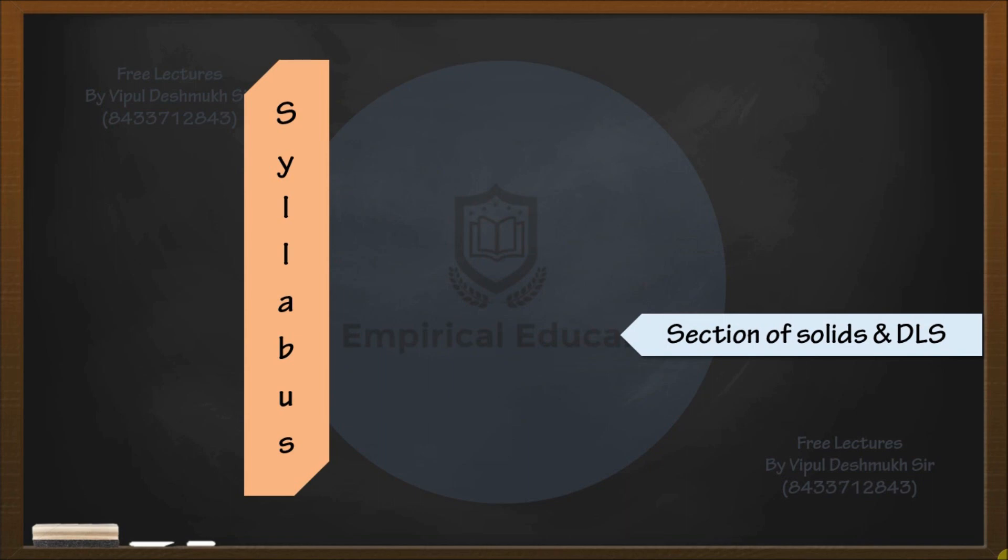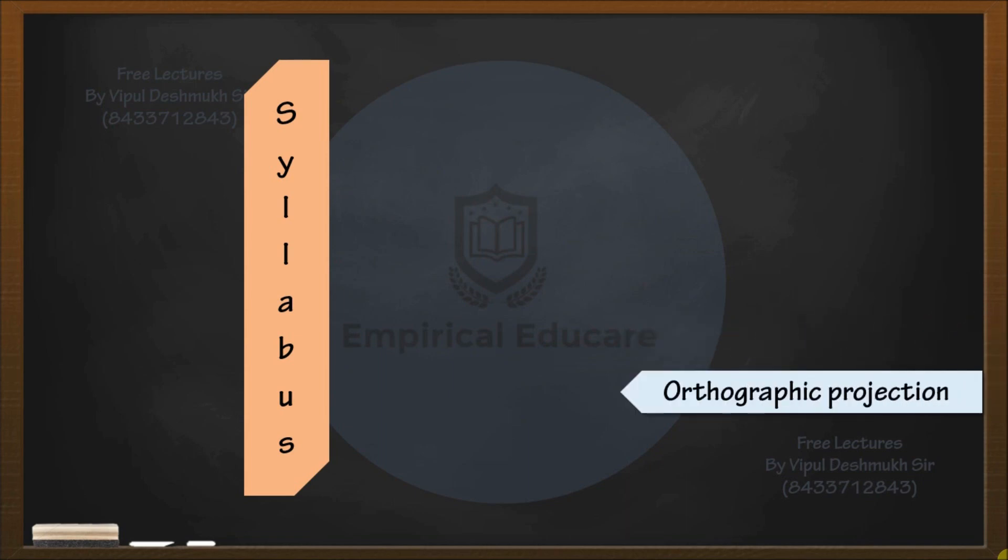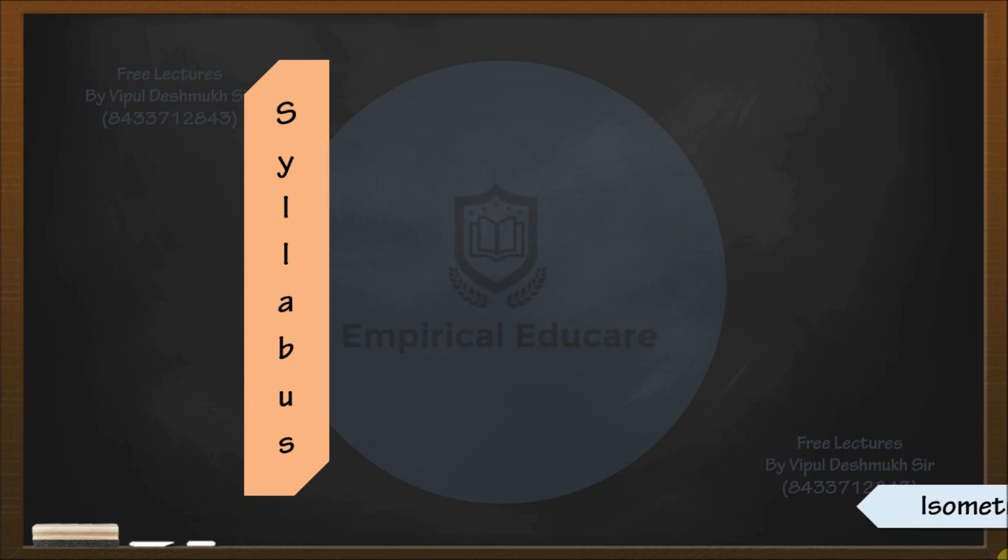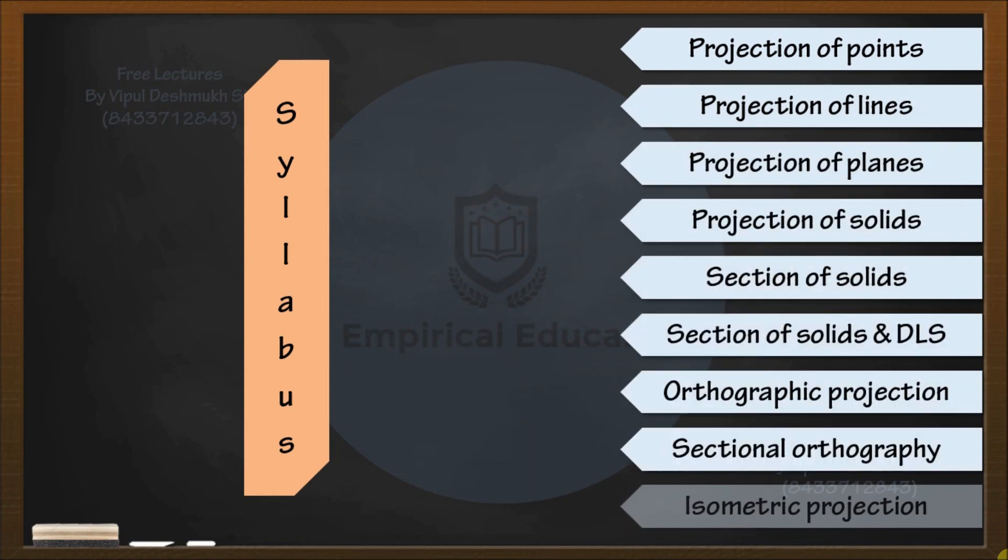The sixth chapter is section of solids and development of lateral surfaces. The seventh chapter is orthographic projection, the eighth chapter is sectional orthography, and the ninth chapter, the final chapter, is isometric projection. This is your entire syllabus for engineering drawing.